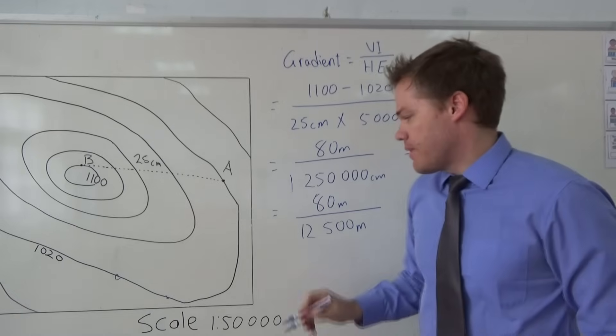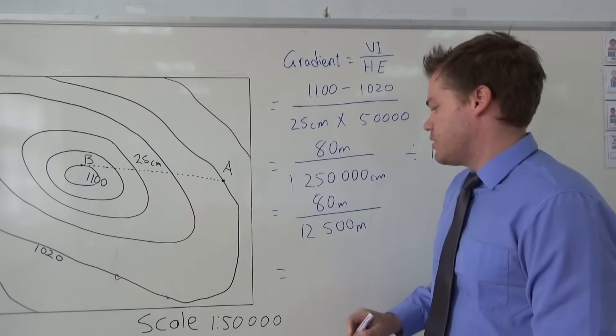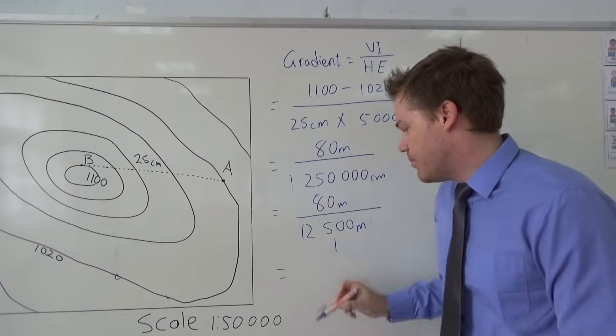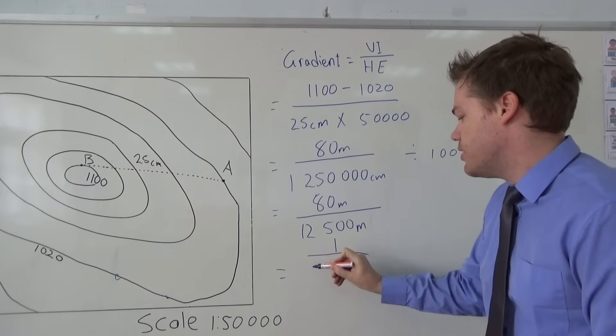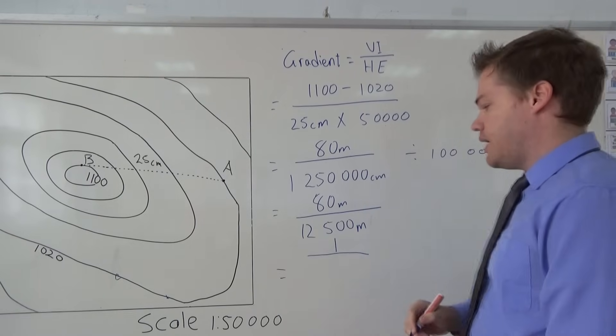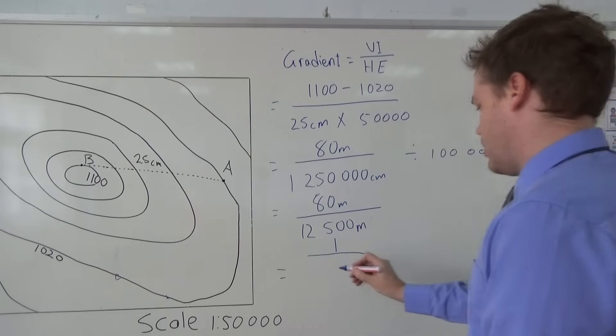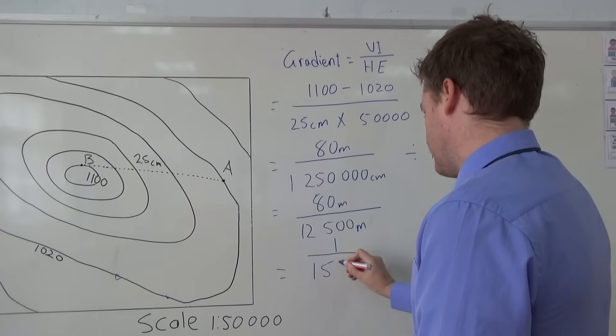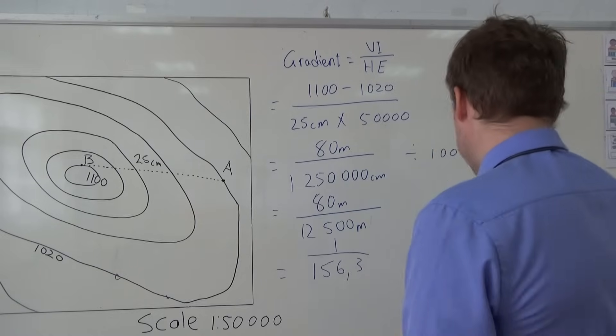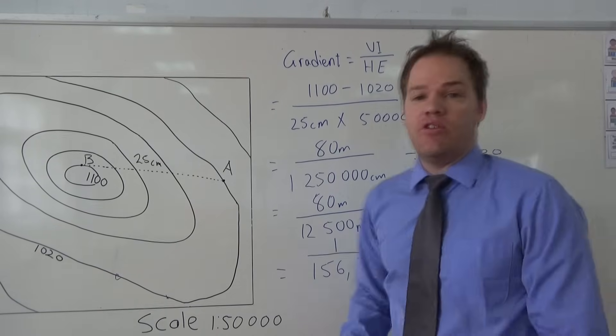Now we want to simplify these numbers, and so what we are going to do is we are going to write a 1 here. How did I get the one? 80 divided by 80. So you do the same below the line: 12,500 divided by 80, and it gives you a total of 156.25. Let's make it three.